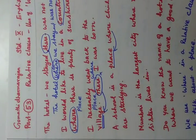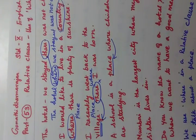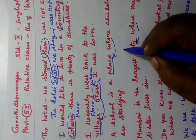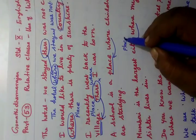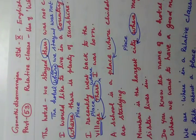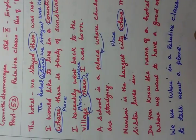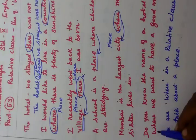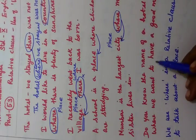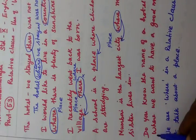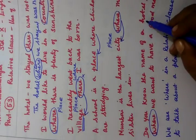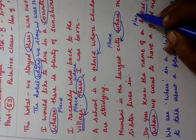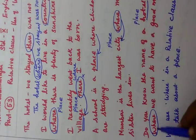Now come to the fifth one. 'Mumbai is the largest city where my sister lives in.' Here 'city' is a place, so since it is a place we are using 'where'. Then: 'Do you know the name of a hotel where we want to have a good meal?' Hotel refers to a place, so place — where — we are using 'where'.